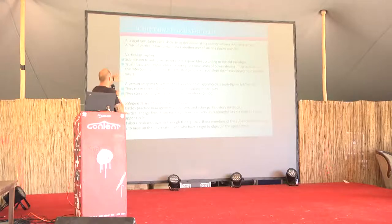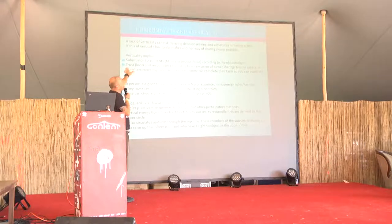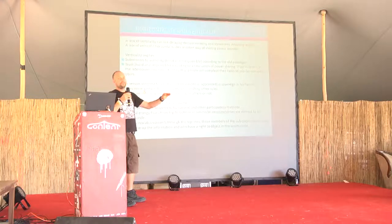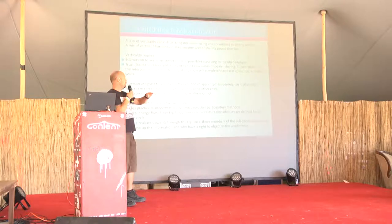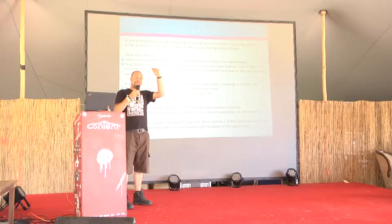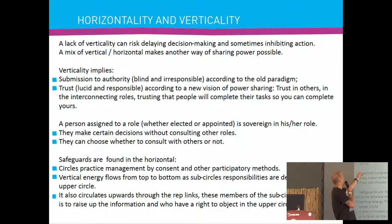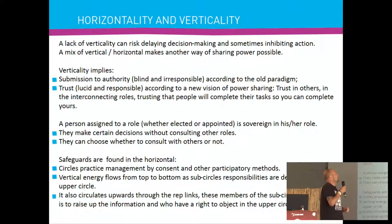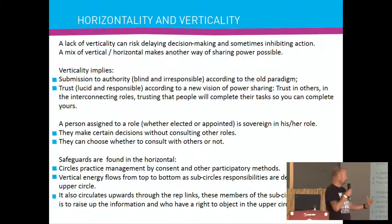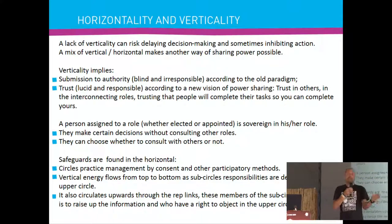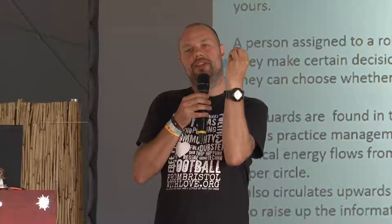Very often the idea of verticality implied submission to authority — which is why people started looking for more horizontal structures, feeling it was very top-down with people being told what to do by a small group or one individual. But in this model, verticality means trust according to a new vision of power sharing. We trust people, we give them power — we give them the authority to do things and the accountability to deliver on those things. When a person is assigned to a role, whether elected or appointed, they are sovereign in that role.